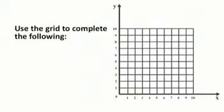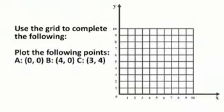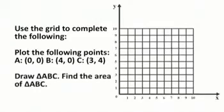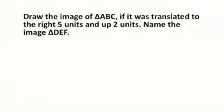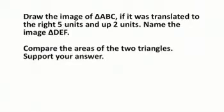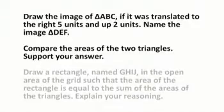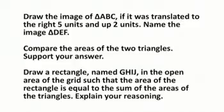Use the grid to complete the following. Plot the following points: A (0,0), B (4,0), C (3,4). Draw triangle ABC. Find the area of triangle ABC. Draw the image of triangle ABC if it was translated to the right 5 units and up 2 units. Name the image triangle DEF. Compare the areas of the two triangles. Support your answer. Draw a rectangle named G-H-I-J in the open area of the grid such that the area of the rectangle is equal to the sum of the areas of the triangles. Explain your reasoning.